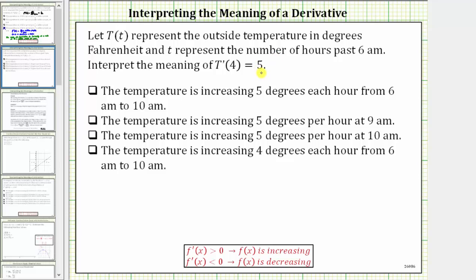And now to help us interpret the meaning of this derivative function value, let's also write this using Leibniz notation, where we can say that big T prime of four equals dT/dt when t equals four equals five. Leibniz notation helps us remember this derivative function value indicates the rate of change of big T with respect to little t.